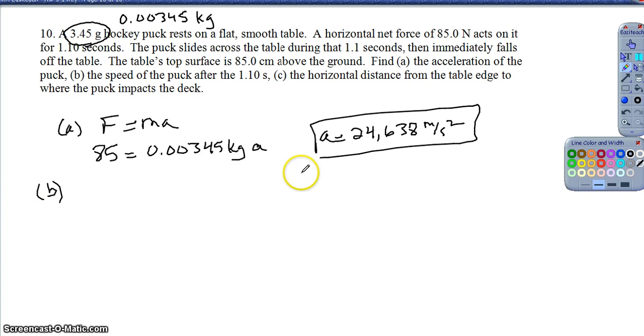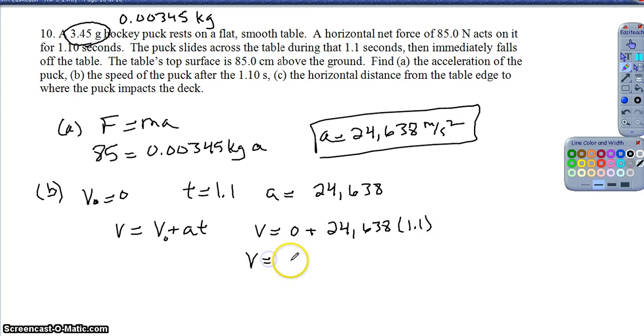So then for part B, they asked me to find the speed of the puck after 1.10 seconds. We'll assume that it's starting at rest. So my initial velocity is zero. The time is 1.1 seconds, and the acceleration is a mere 24,638. So it's going to be moving pretty quickly. And in fact, if I just set up my VOTAT, my velocity as a function of time, the velocity equals zero plus the acceleration, 24,638, times 1.1 seconds. So my final velocity after 1.1 seconds ends up being about 27,100 meters per second.